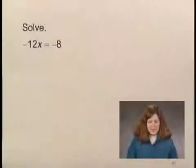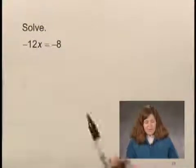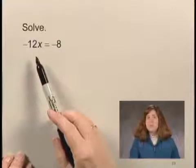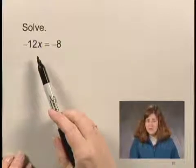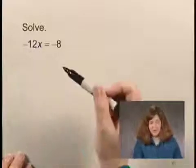In this exercise, we'll solve the equation negative 12x equals negative 8. In order to solve this equation for x, we need to get x by itself on one side of the equation. To do this, we'll divide both sides of the equation by negative 12.